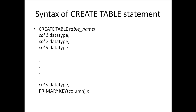After declaring the first column, if you want to add more columns you use a comma character. Once you're done specifying all the columns and data types, put in the closing parenthesis and a semicolon to terminate the statement. I've shown the primary key constraint on the last line of the CREATE TABLE statement, but you can also specify it inline while defining the column.